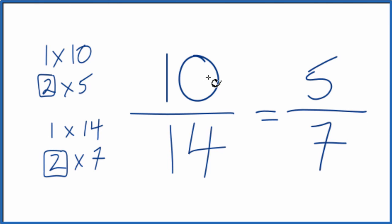What that means is if you divide 10 by 14 or 5 by 7, you'll get the same decimal answer. That's because they're equivalent fractions.